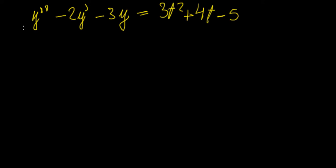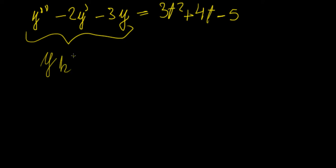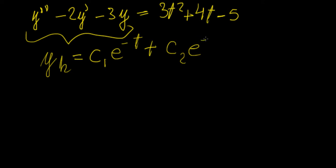Right off the bat you can see that this is the same homogeneous section that we had in the previous equation, and we found that the homogeneous solution to this was c1e to the minus t plus c2e to the 3t.